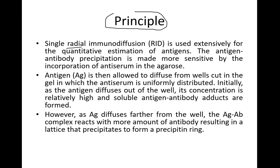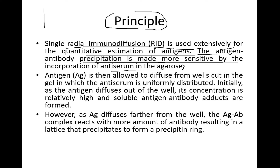Single radial immunodiffusion is used extensively for the quantitative estimation of antigens. The antigen-antibody precipitation is made more sensitive by incorporation of antiserum in the agarose. It's a very simple procedure in which we take a plate, add a solution containing an antiserum or antibody throughout, and cut two or three holes into which we pour the antigen.